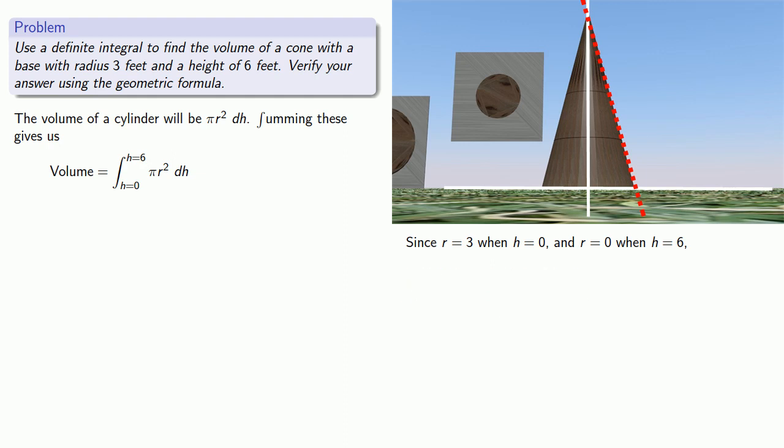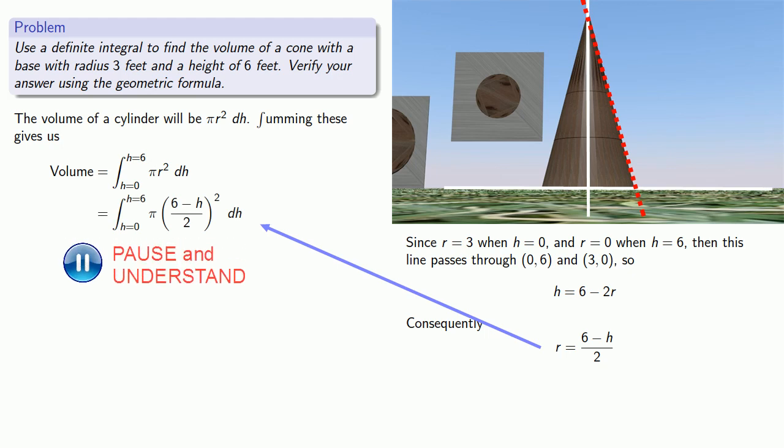And so that means this line passes through the points (0, 6) and (3, 0). So its equation will be h equals 6 minus 2r. And since I need r in terms of h, I'll solve this equation for r. And I can substitute that into my integral. And so in my integrand, the only variable is h, and we can proceed with the calculus.